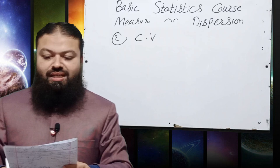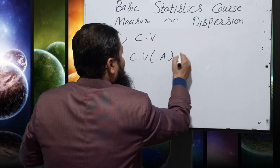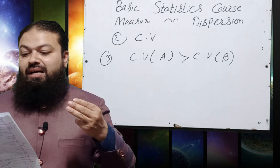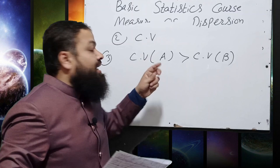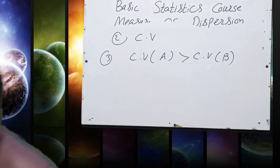Question number 3: Let A and B be any two groups. If the coefficient of variation of A is greater than the coefficient of variation of B, then: (a) A is more variable, (b) B is more variable, (c) A is less variable, (d) none of the above. If CV(A) > CV(B), then A is more variable — there is larger variation in A compared to B.